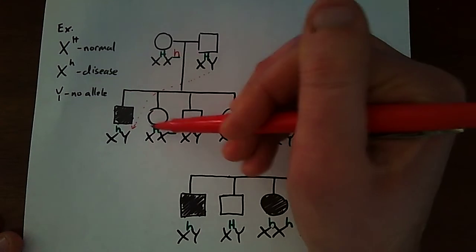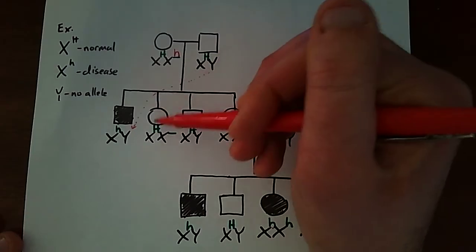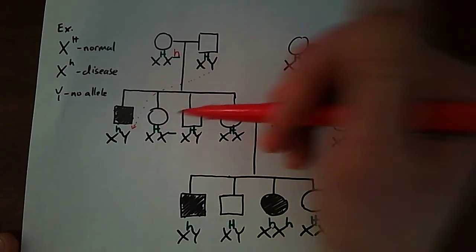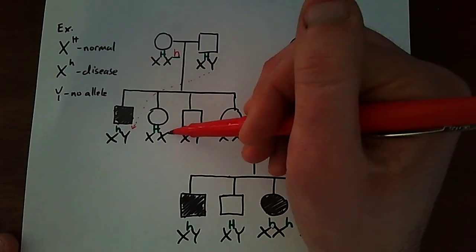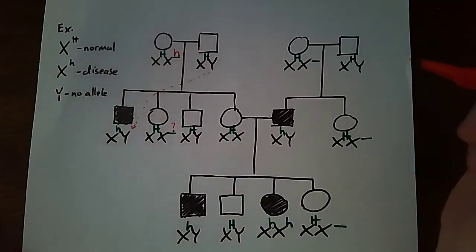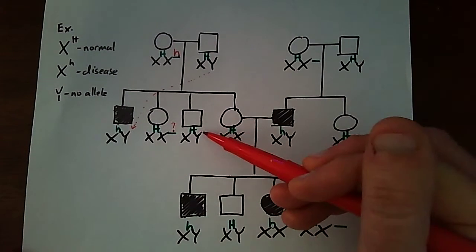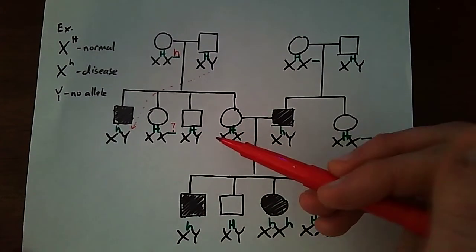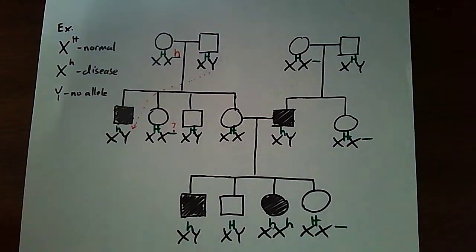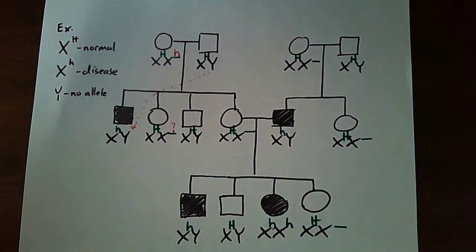We don't know if this big H — this dominant allele — came from the mother or the father. So I'm going to make this a question mark. This one's already completed because it's just the Y chromosome. And for this female, it should have a dash right here.